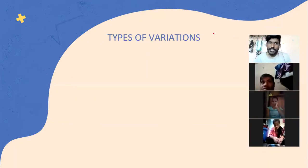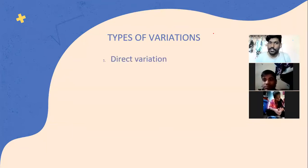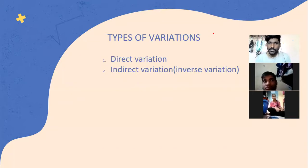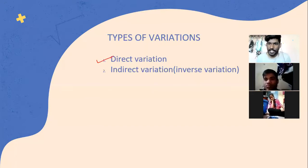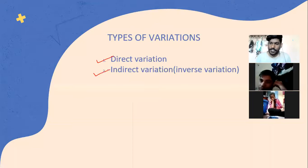There are two types of variations we'll be studying in this chapter. The first is called direct variation, also called direct proportion. The second is indirect variation, also called inverse variation. First we'll see direct variation and do some sums on it, then after that we will see inverse variation and solve examples on that as well.